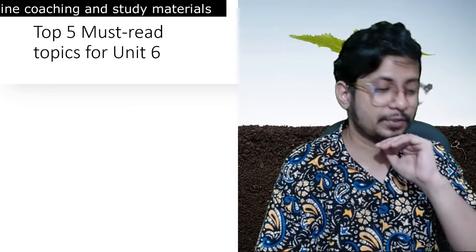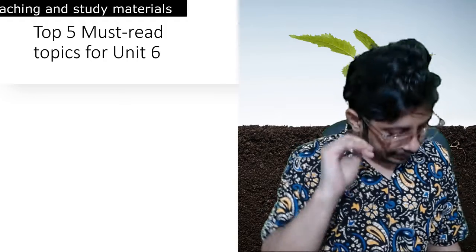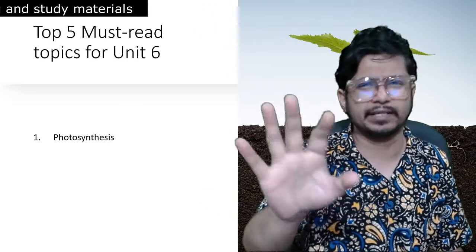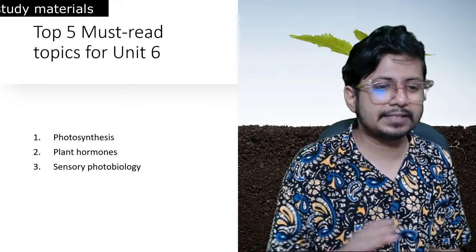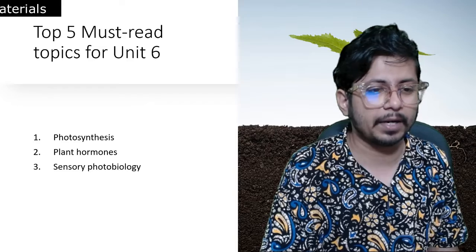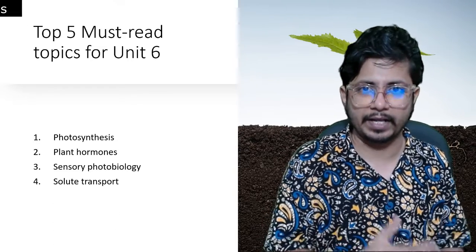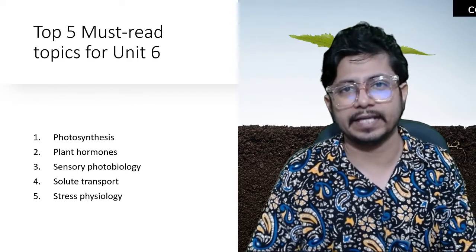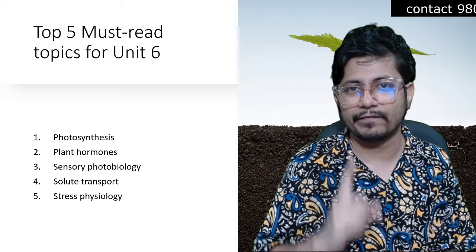Now let's look at the top five must-read topics for Unit 6, crafted based on the last 10 years of CSNA question papers. Number one: photosynthesis — C3, C4, CAM plants, and related topics. Number two: plant hormones — very, very important. Number three: sensory photobiology — phytochromes and cryptochromes. Number four: solute transport — transport via xylem and phloem, water transport, and sucrose transport. Number five: stress physiology. These are the five most important topics you must always prepare from Unit 6, Plant Physiology.